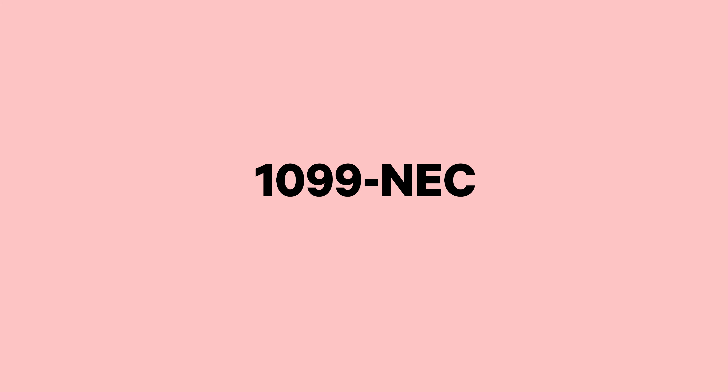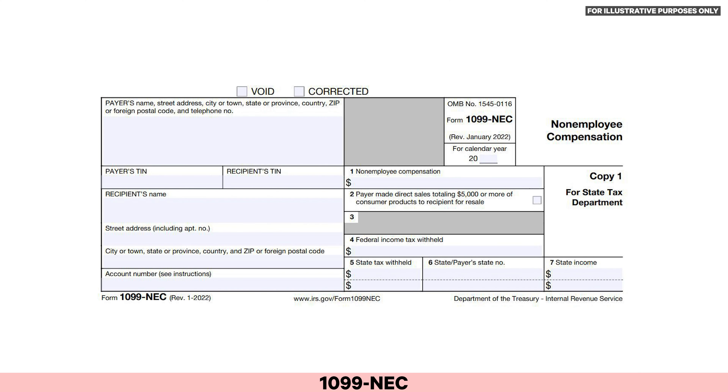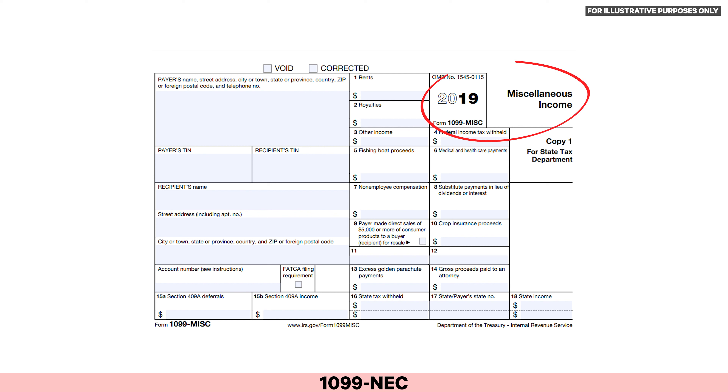The 1099-NEC is the first tax form we need to know. If you're self-employed, you can now expect to receive this form from any business that paid you $600 or more for non-employee compensation. Prior to tax year 2020, if you made over $600 through self-employment, you likely received tax form 1099-MISC. But as of tax year 2020 and going forward, this type of income is now reported on form 1099-NEC — non-employee compensation.